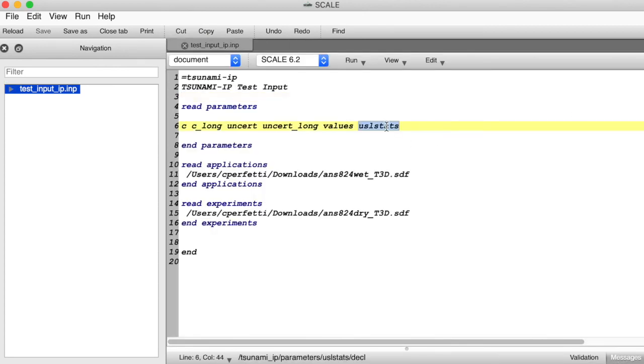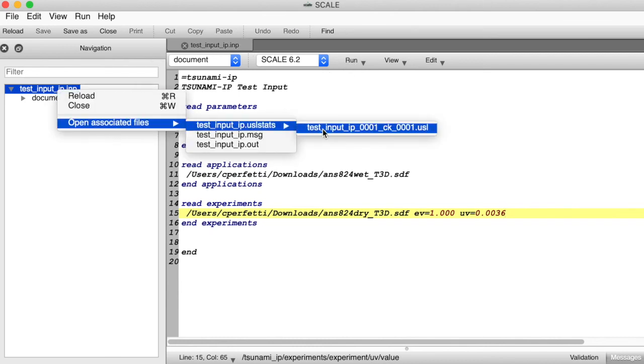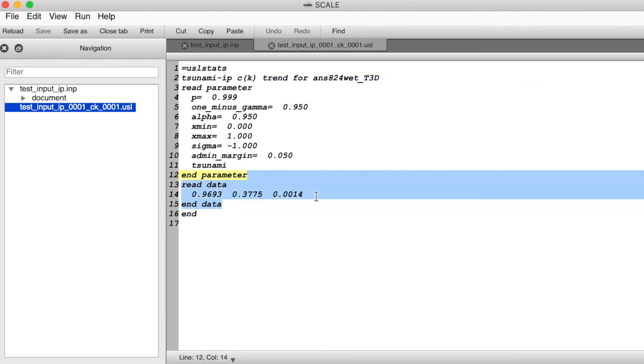Lastly, we can use the secret and very convenient USL stats parameter to have tsunami IP automatically prepare a USL stats style input, which makes it very easy to prepare a USL stats input using these benchmark cases. If we use this USL stats option, then we can use the EV equals and the UV equals input options in the read experiment block to specify the reference experimental K effective and its uncertainty for these benchmark experiments. If we examine the USL stats input, we'll see that it now includes a tsunami input option, which tells USL stats that it will be drawing a trend using C sub K values and that it should extrapolate this trend to a value of C sub K equals one.